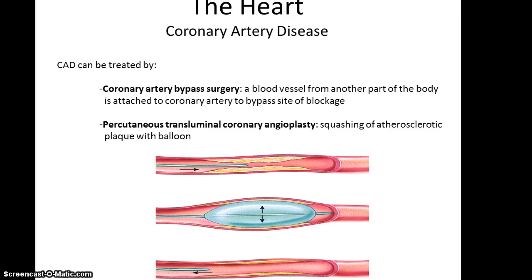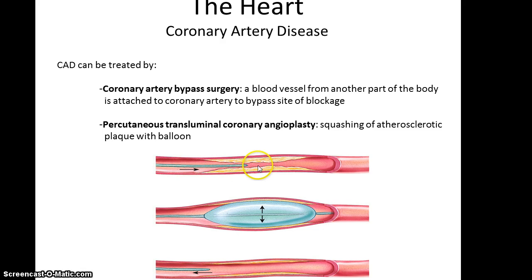To treat coronary artery disease there are a couple of approaches. There's coronary artery bypass surgery, which means they remove the blocked blood vessel and add an artery from another part of the body to replace it. Then there's percutaneous transluminal coronary angioplasty, which means they insert a flexible tube through the leg up into the area of blockage in the heart, and it fills up like a balloon to squish out the plaque so it's no longer blocking the artery as much. And that's it for Chapter 13 — I hope you enjoyed it.